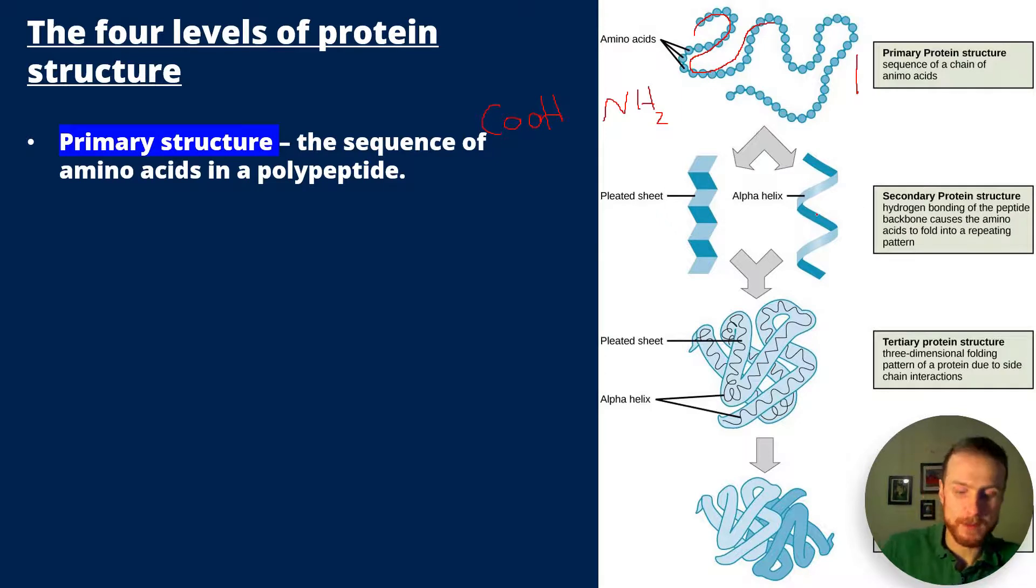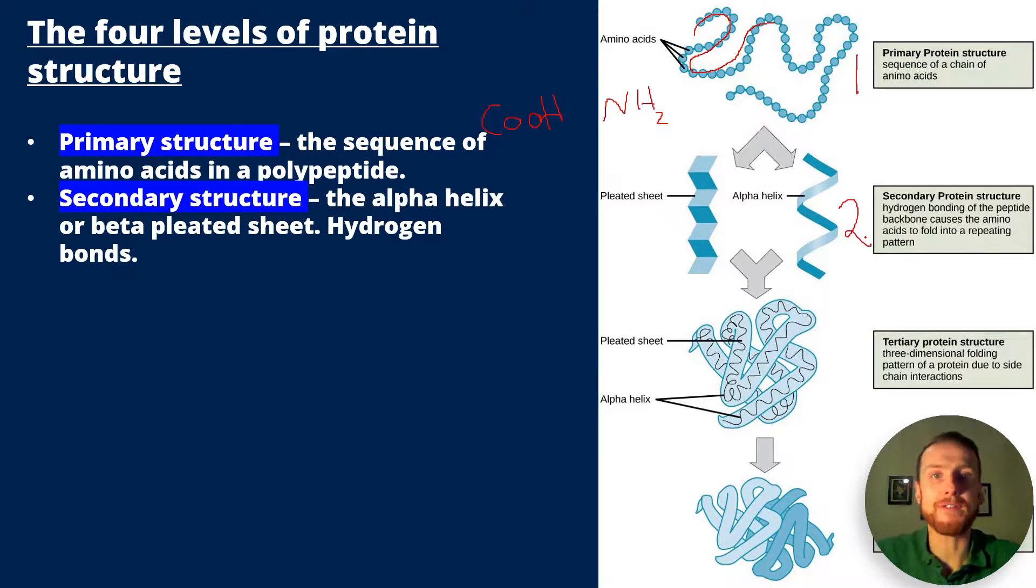Then we have the secondary structure. The secondary structure is the alpha helix or the beta pleated sheet. The beta pleated sheet is kinked or bent because of hydrogen bonds, and the alpha helix is coiled because of hydrogen bonds too. This is where we have a little bit of folding going on.